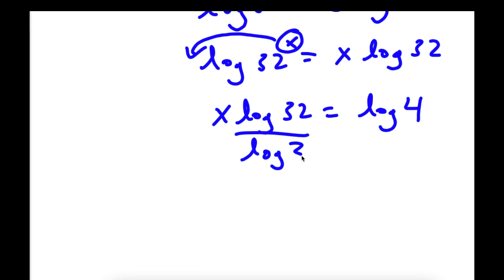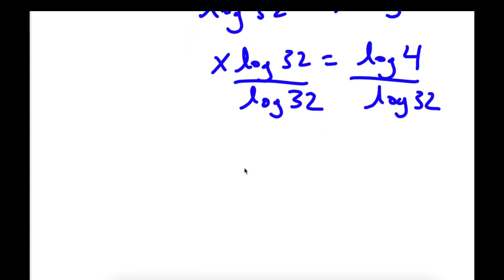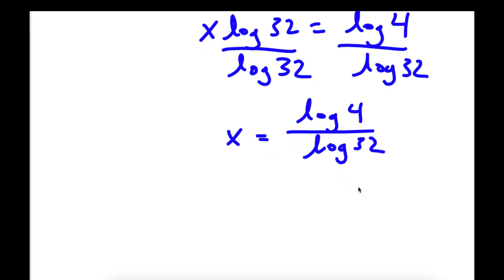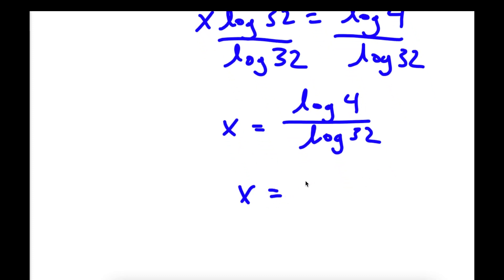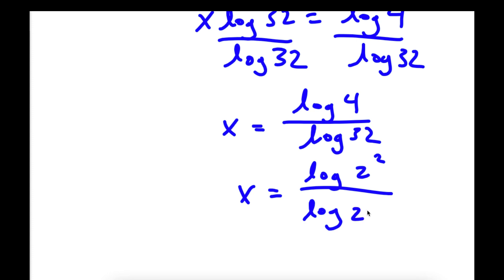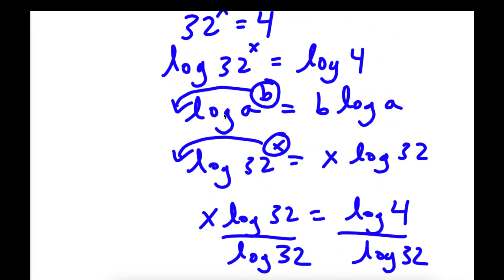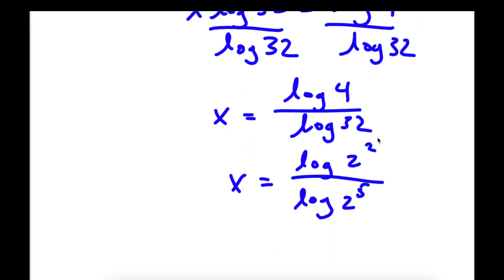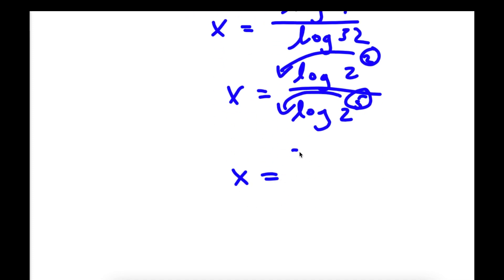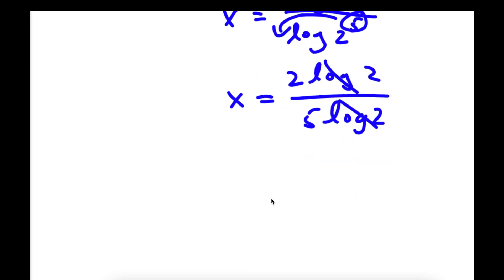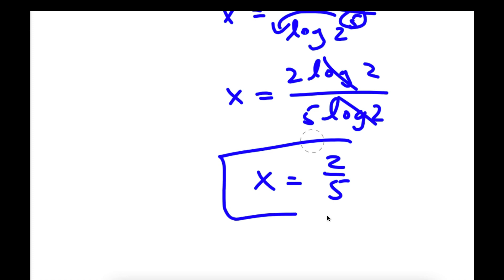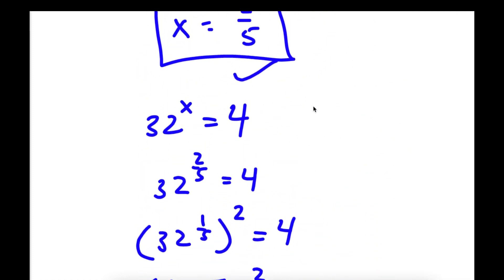So now I have x times log 32 is equal to log 4. Now I can divide both sides by log 32, so I get x is equal to log 4 over log 32. Now 4 is the same thing as 2 squared, and 32 is the same thing as 2 to the power of 5. Remember, if we have log a to the power of b, this is equal to b times log a. So I'm going to move the exponents to the front. Now I have x is equal to 2 times log 2 over 5 times log 2. These two log 2s cancel out, so I end up with x is equal to 2 over 5. As you can see, we have the same answer but we used two different methods.